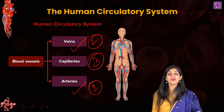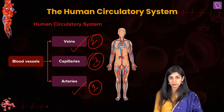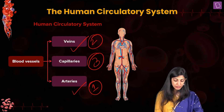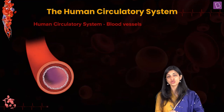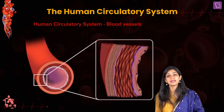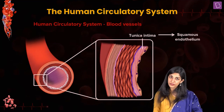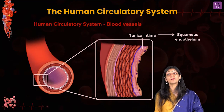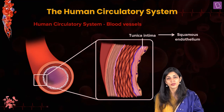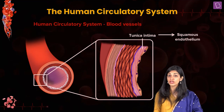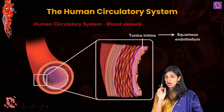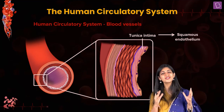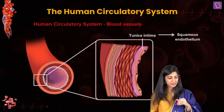Arteries and veins have a very similar structure, so we don't have to learn extra. We are going to study the structure of these blood vessels and the differences. Arteries and veins are the pipes which carry and circulate the blood — they have a huge responsibility. I always tell you the function before the structure because they are interconnected.